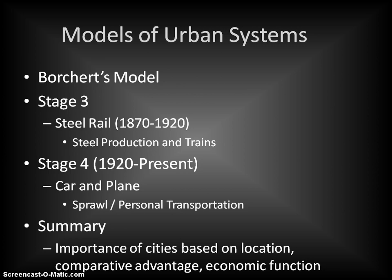Stage four covers 1920 to the present — the Car and Plane Era. These are cities established along car travel and air travel. One of the most important developments during this period is the interstate highway system. This era is characterized primarily by suburban sprawl and the use of personal transportation. We see a shift toward cities focused on suburban development, cheap land surrounding central cities, and climate preferences. Los Angeles is one of the first real auto cities. Cheap land in California drew people after World War II, facilitated by the interstate highway system.